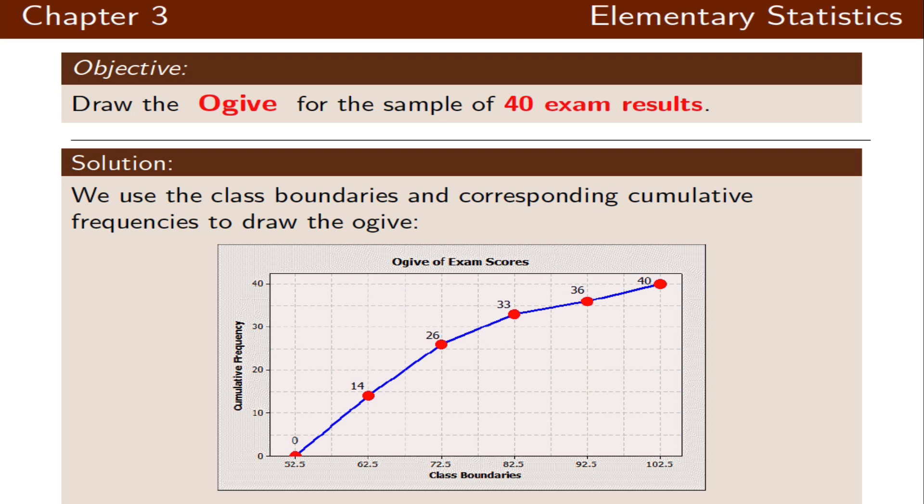Our first class boundary was 52.5 which had a cumulative frequency of 0. Then the next one had a frequency of 14, which is the same as the cumulative frequency. Then the second cumulative frequency was 26, and 33, 36, and 40. You can refer to the table. All we need to do is connect these dots together.